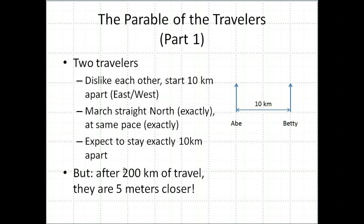What they notice is that after 200 kilometers of travel going north, they are not quite 10 kilometers apart anymore. They're 5 meters closer to each other. Now, that wouldn't be so weird, except that these assumptions, that they are going exactly straight, exactly north, exactly the same pace, they really shouldn't be any closer to each other.